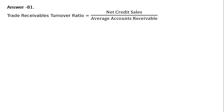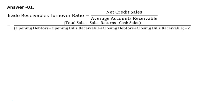The next question is: calculate trade receivables turnover ratio from the following information. Trade receivables turnover ratio equals net credit sales divided by average accounts receivable, which equals total sales minus sales returns minus cash sales, divided by opening debtors plus opening bills receivable plus closing debtors plus closing bills receivable, whole divided by 2.